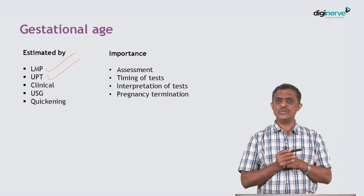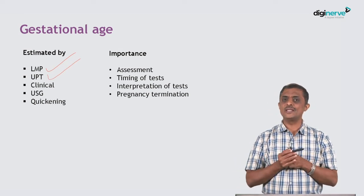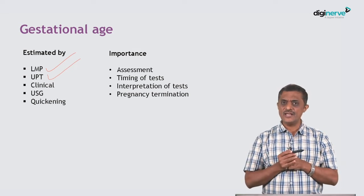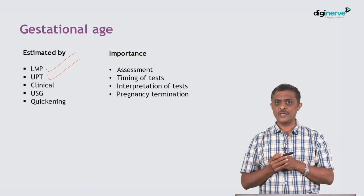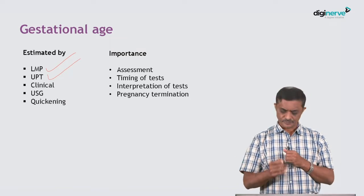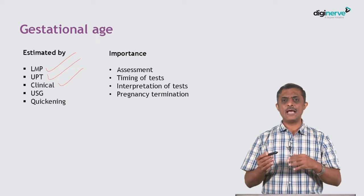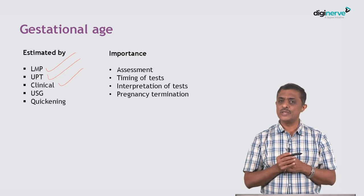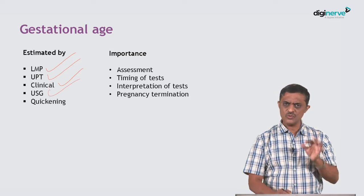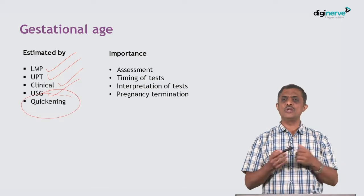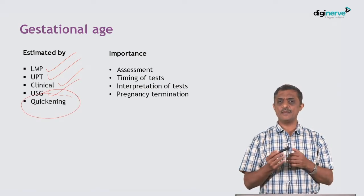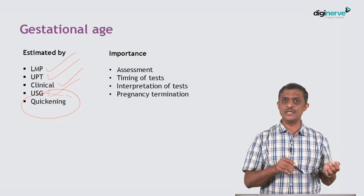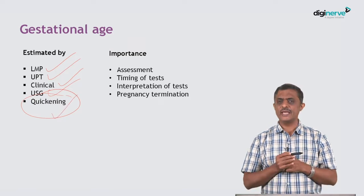Urine pregnancy test usually becomes positive between 30 to 35 days of the LMP, so the first positive UPT after missing the period can give a clue about the duration of gestation. Clinically, by palpating the uterus, you can know whether it is 12, 14, or 16 weeks. Ultrasound is one of the best methods. Quickening occurs at around 18 to 20 weeks in a primigravida, slightly earlier in a multigravida. Though it may not be very accurate, if the woman remembers the quickening date, it might help estimate gestational age.